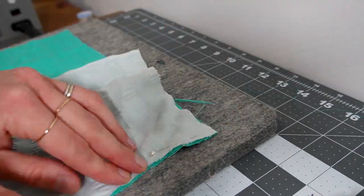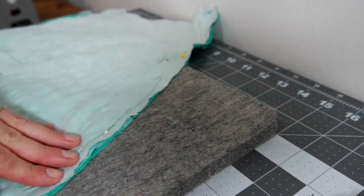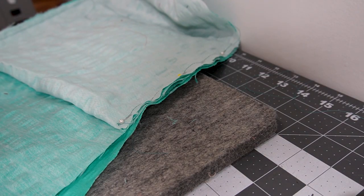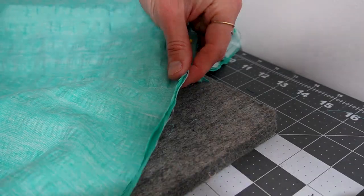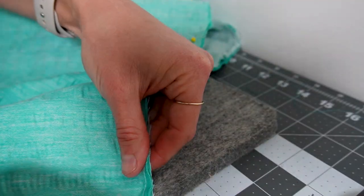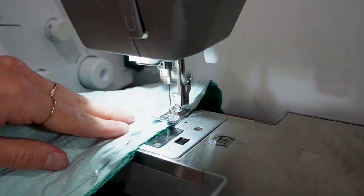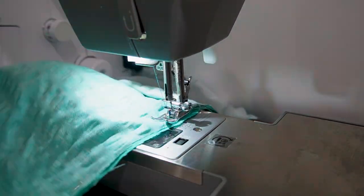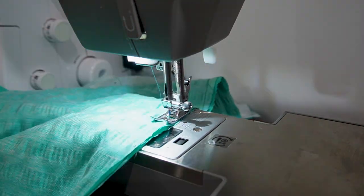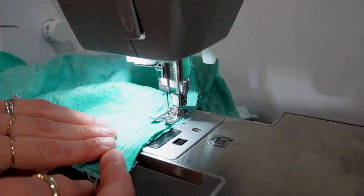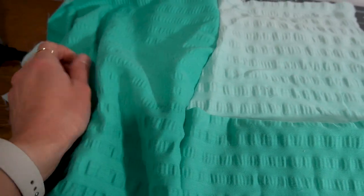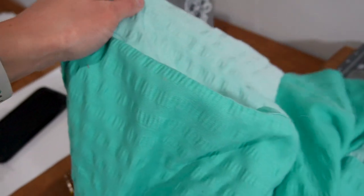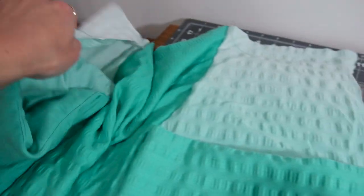Next you're going to take the center front piece and attach right sides together and pin all the way down the side seam following the called for seam allowance. Next step is to stitch it all together. Make sure you've changed back to your regular stitch length from your basting stitch length. And here is your center front attached to both of your side pocket panels. It's starting to look like a skirt!